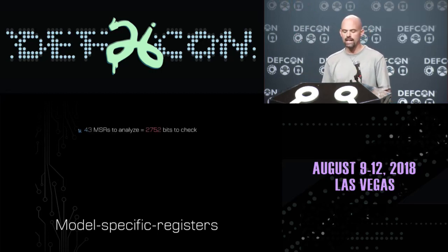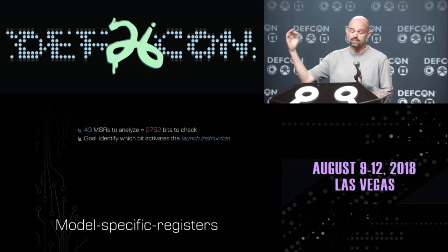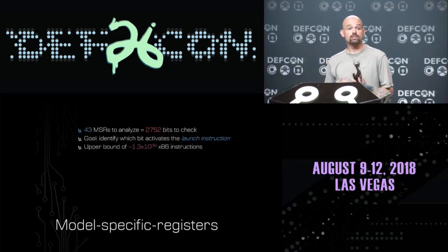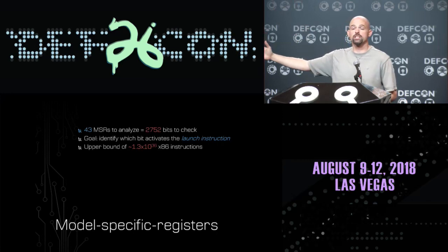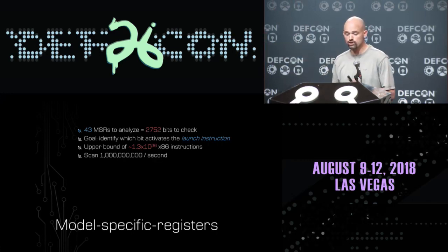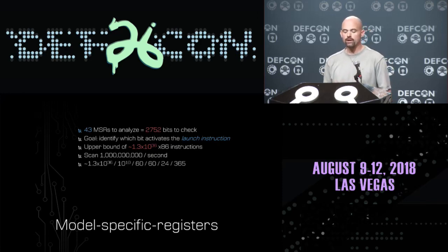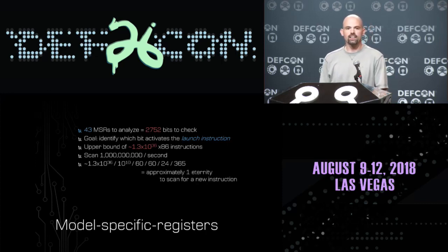But it's still a lot to tackle — that's 2,752 bits worth of MSRs to check. My theory is that one of these bits is going to activate a new x86 instruction. Now, x86 is a really complicated instruction set. A rough upper bound would be somewhere on the order of 1.3 undecillion possible instructions. So I want to figure out: did one of these MSR bits create a new instruction? Even with a billion instructions scanned per second, the Fermi calculation — 1.3 undecillion divided by 1 billion divided by seconds, minutes, hours, days, years — means it's going to take about an eternity to scan the entire instruction set.